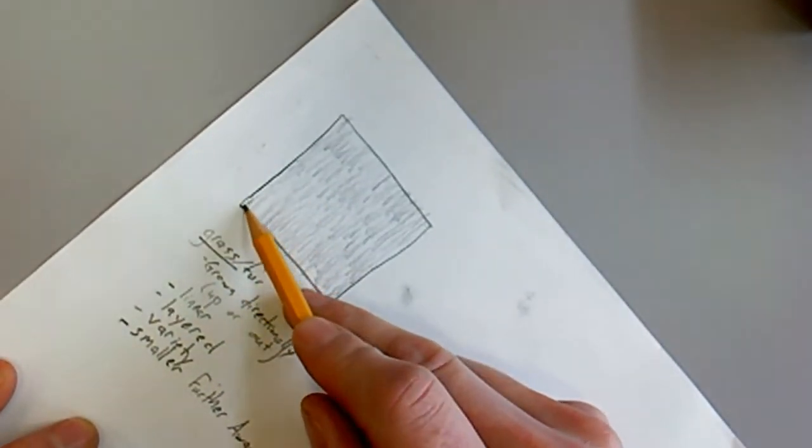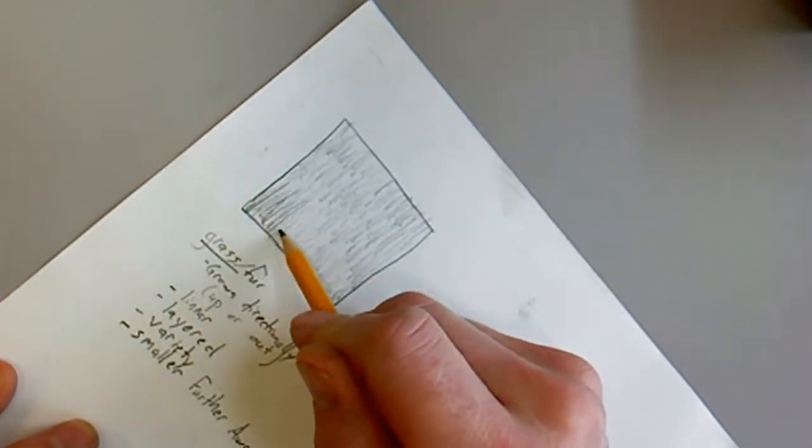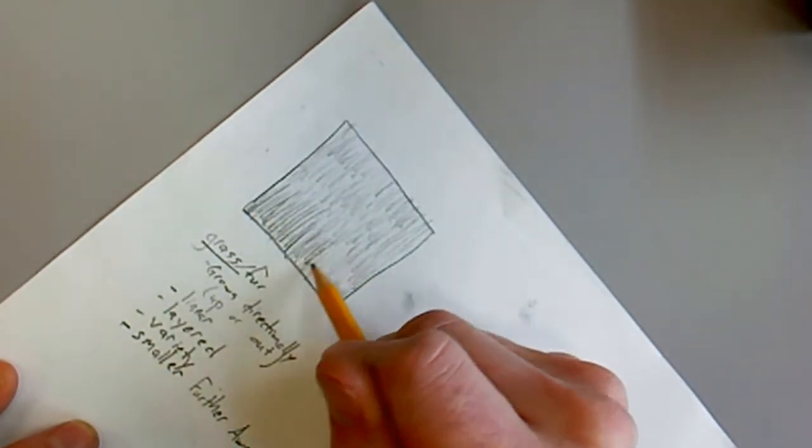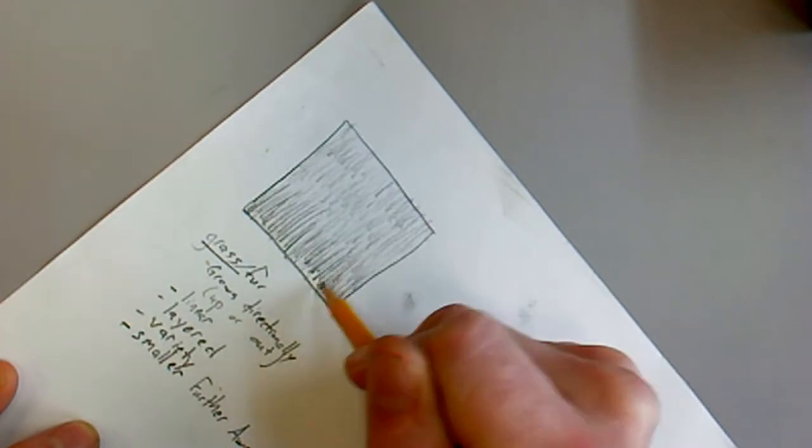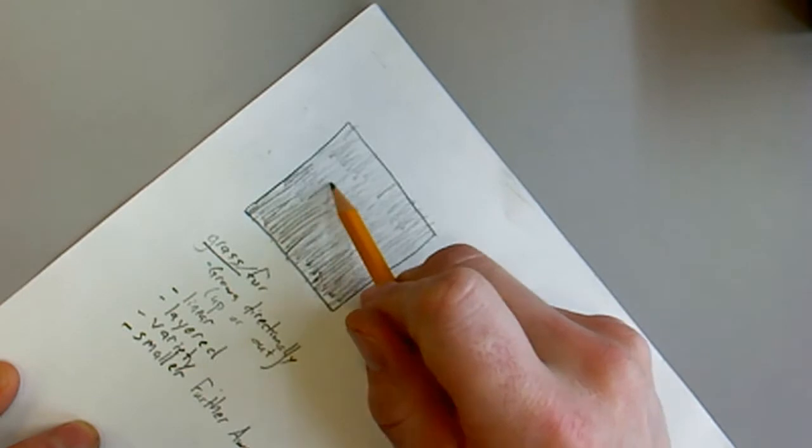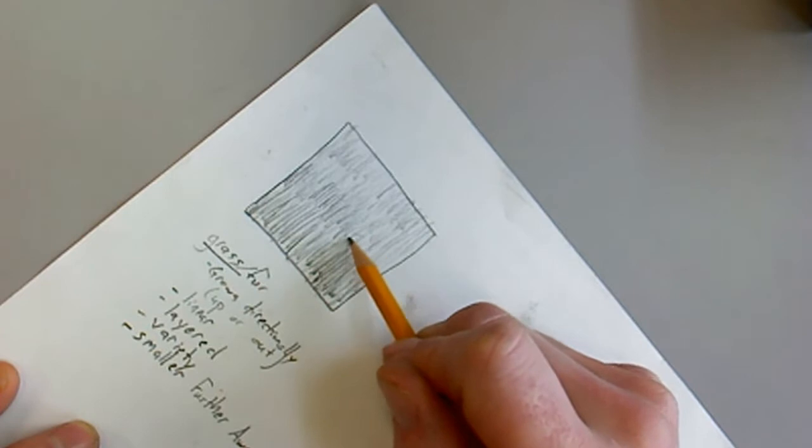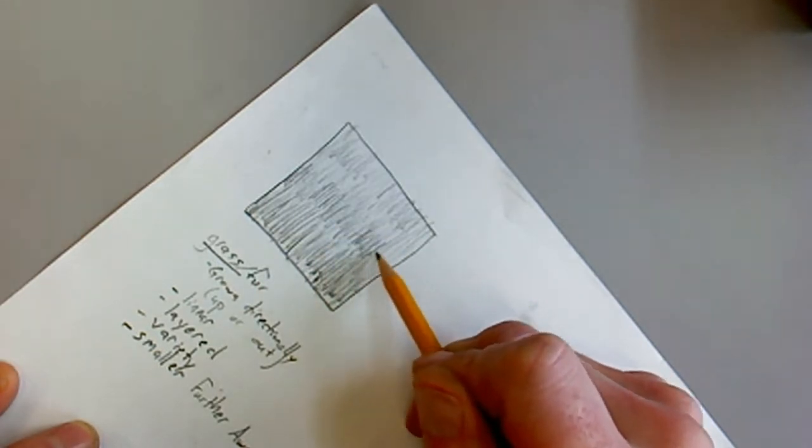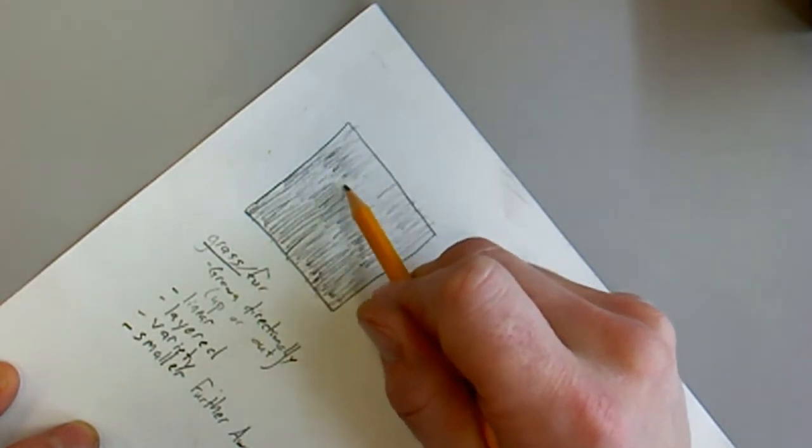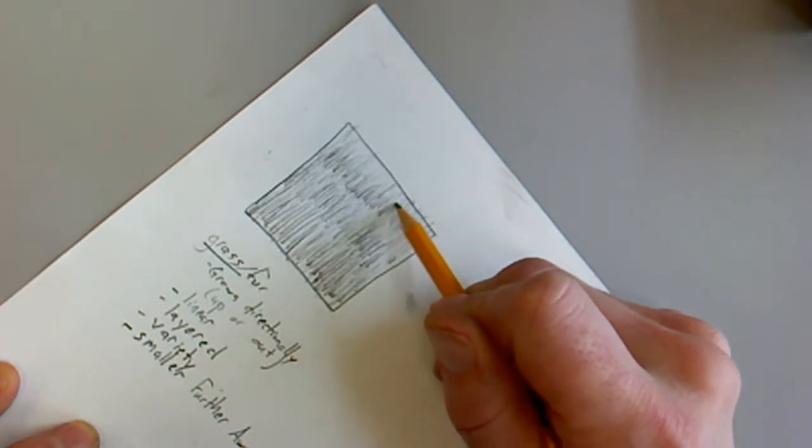you're going to go in holding the pencil at a more steep angle using the tip of the pencil and drawing lines that start low and go upward. Trying to keep approximately the same length for each line and trying to lift the pencil off at the top of your mark. Notice that we are not drawing in a zigzag pattern. We are drawing up and then moving the pencil back to the starting position. So each mark is just on the upstroke.